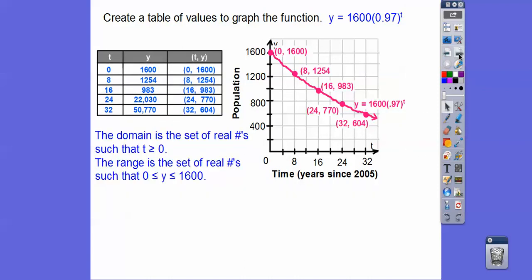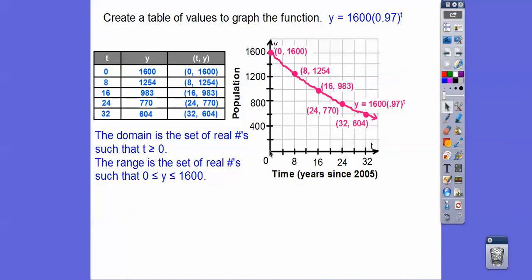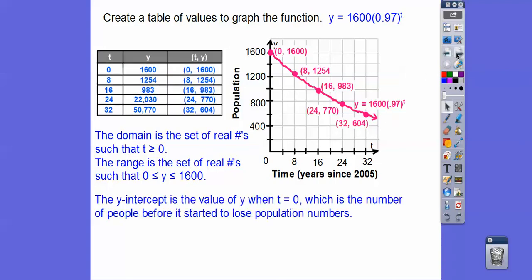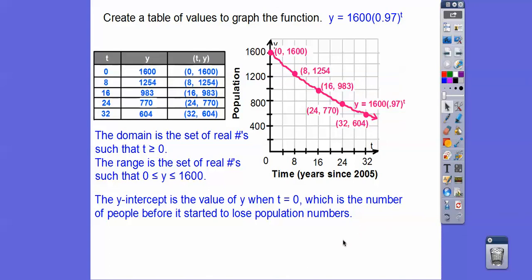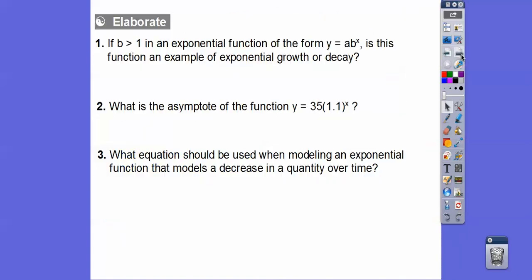And then it said, describe the domain. The domain is T is greater than or equal to 0. And the time is greater than or equal to 0. And the range is from 1600 all the way down to, I don't know if the town becomes a ghost town. Some towns are ghost towns. If you go, like, to Nevada, I was telling my kiddos when the gold rush was going on, there was a bunch of towns that popped up. And then when they were out of gold or silver or whatever it was up there, they were mining up there. They moved away. And you see the buildings, and some of the buildings still have furniture in it and everything. It's fascinating. But anyways, there's no people living in there. It's kind of spooky. So anyways, so the y-intercept is the value of y when t equals 0, which is the number of people before it started to lose the population. So it was at 1600.